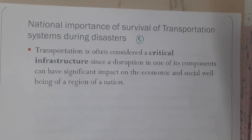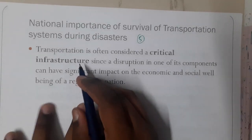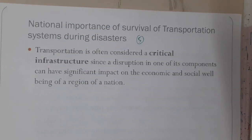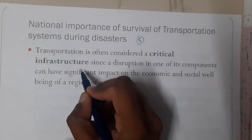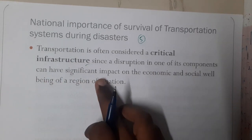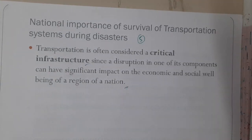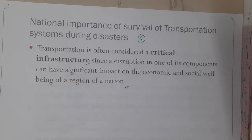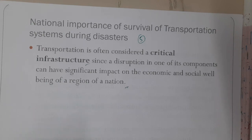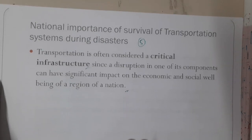In this lecture, let us go through the national importance of survival of a disaster, and in the next two lectures we'll be discussing about man-made and natural disasters with a few examples. Whatever the disaster may be, it will cause a problem. Transportation is often considered as a critical infrastructure, since a disruption in one component can have a significant impact on the economic and social well-being of a region or nation. A small issue could lead to a huge disaster, and whenever a disaster occurs, the road or any kind of infrastructure should be maintained properly.